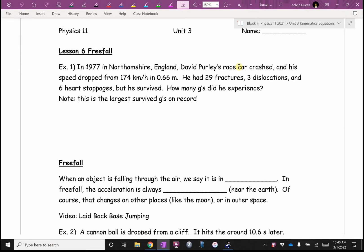In 1977 in Northamshire, England, David Purley's race car crashed and his speed dropped from 174 kilometers per hour to zero in 0.66 meters. He had 29 fractures, three dislocations, his heart stopped six times, but he did survive. That's the person who has survived the largest G's where we actually had video data and could analyze it on record. Maybe someone has survived more in a car accident that wasn't videotaped because we didn't have the data.